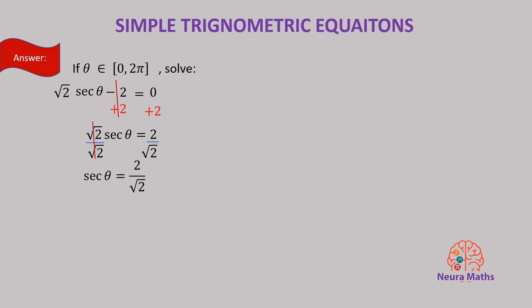Now, this is the value of the trig function. We need to find the value of theta. To find theta, it is better to convert it to the basic function. The reciprocal of sec theta is cosine theta. So, cosine theta equals root 2 over 2. Now what acute angle whose cosine is root 2 over 2? The angle whose cosine is root 2 over 2 is 45 degrees.